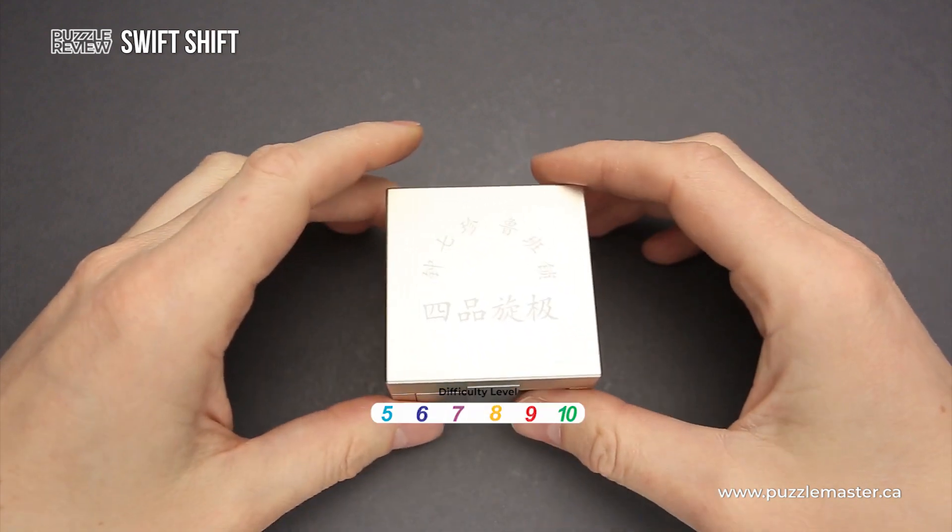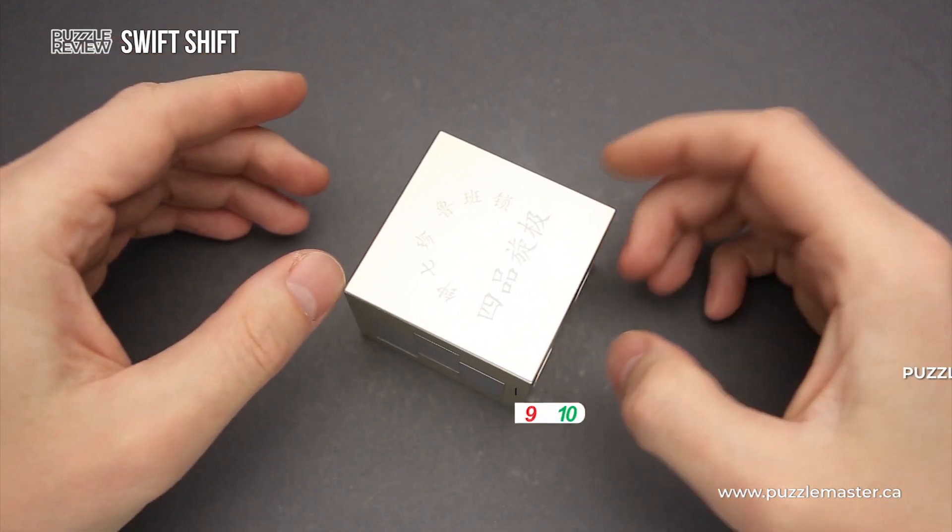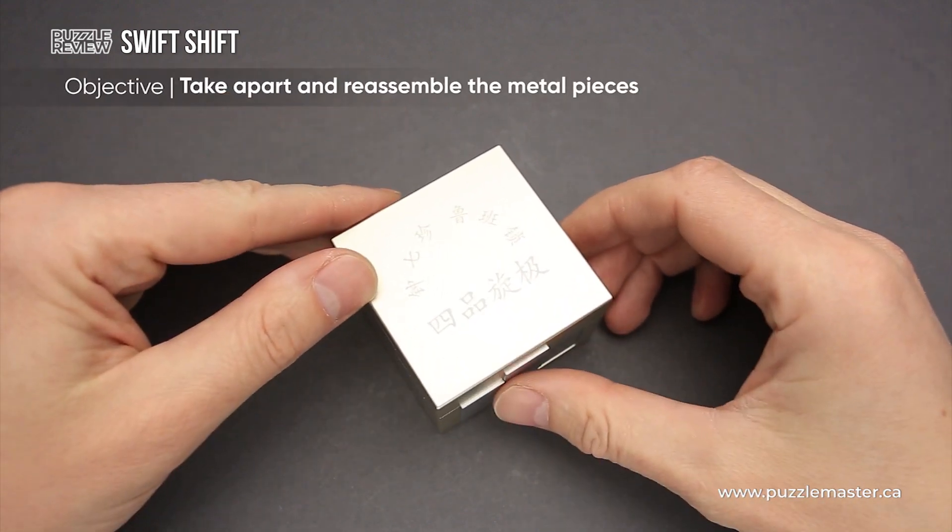The difficulty level of the Swift Shift puzzle is 10 out of 10 on Puzzle Master's difficulty scale that runs from 5 to 10. The objective of the puzzle is to remove all parts from the frame.